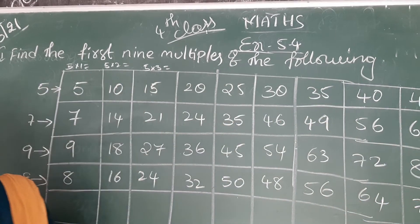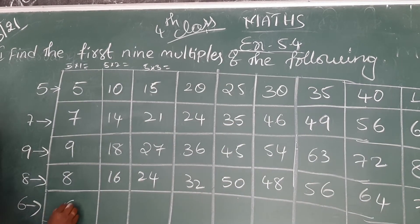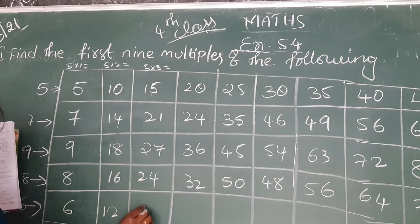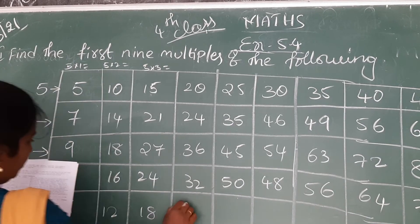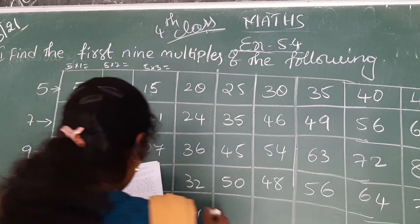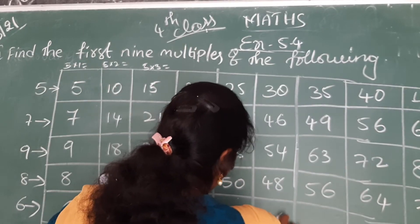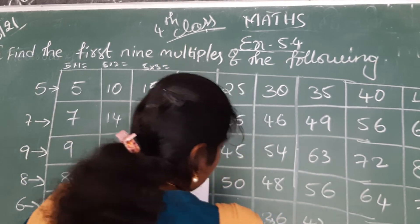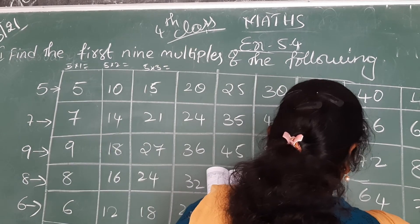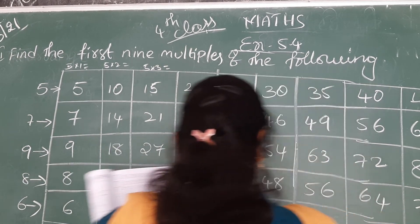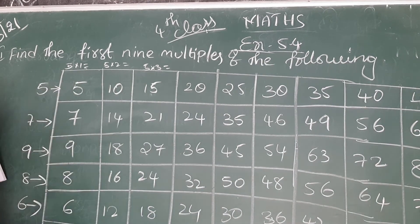Next go for 6 table. 6 ones are 6. 6 twos are 12. 6 threes are 18. 6 fours are 24. 6 fives are 30. 6 sixes are 36. 6 sevens are 42. 6 eights are 48. 6 nines are 54. 6 table completed.